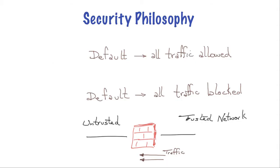Our organization must now decide on a security philosophy. First, we allow no unsolicited traffic from the WAN to the LAN — that's pretty easy to set up. But for traffic from the LAN to the WAN, we can use two different models: by default, we could choose to allow all traffic, or by default we can choose to block all traffic. Let's look at these two models in more detail.